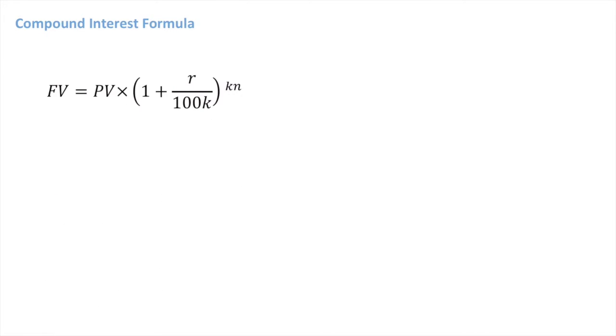The formula states that FV equals PV times 1 plus r over 100k, all of which is raised to the power of kn. Now let's see what each of these terms means.